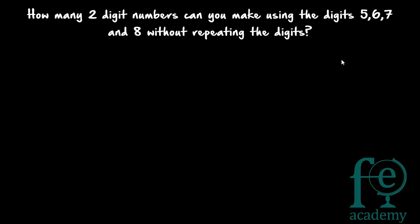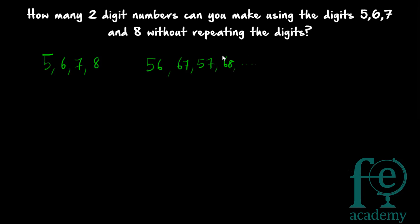Welcome to today's class. Today's question is: how many two-digit numbers can you make using the digits five, six, seven, and eight without repeating the digits? We are having four digits - five, six, seven, and eight. Fifty-six is one two-digit number, then sixty-seven, fifty-seven, sixty-eight, and likewise. Note that fifty-six is different from sixty-five, so arrangement does matter here.